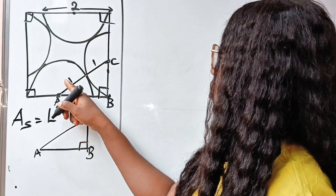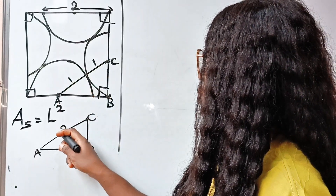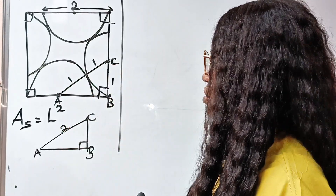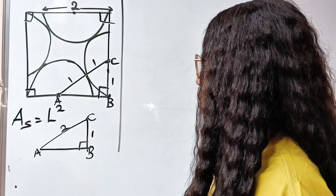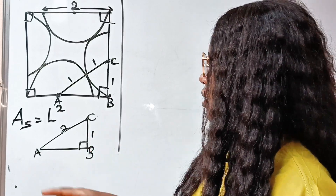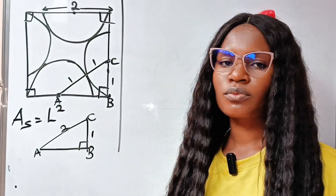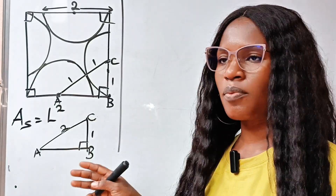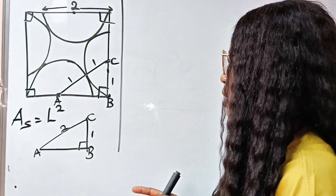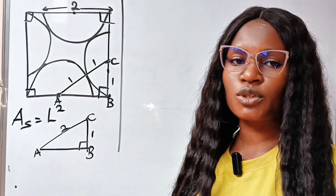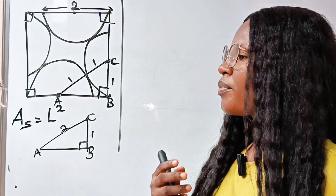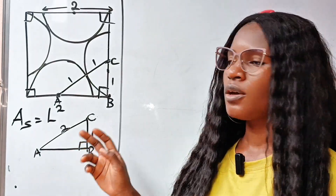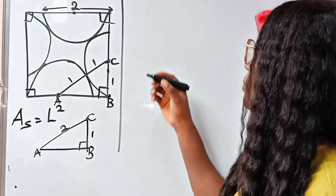So the side from B to C here will be 1 plus 1, which is 2. From here to here is also the radius, which is 1 as well. Now AB is unknown. Because this is a right-angle triangle, we can find the value of AB using the Pythagorean theorem.